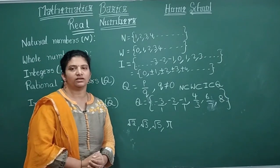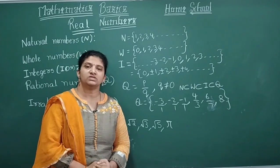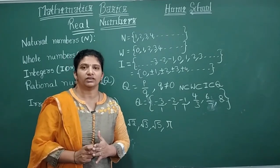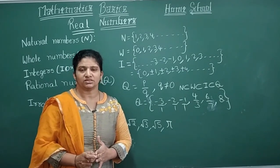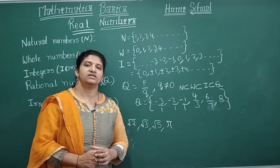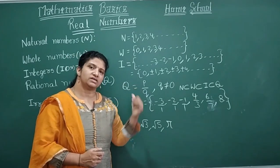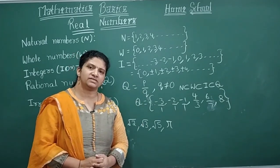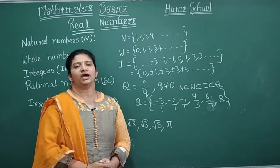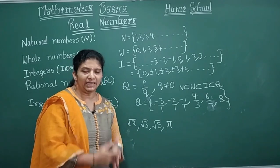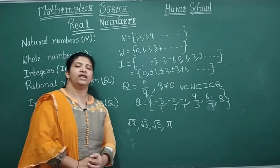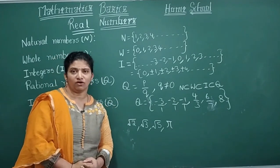Let's recap all the types of numbers. When we start counting, those are counting numbers, also called natural numbers, represented by capital N. Natural numbers including zero are called whole numbers. In integers, negative numbers along with whole numbers are called integers. Rational numbers are numbers which can be expressed in the form P by Q.